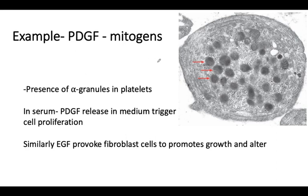When blood clots at a site, these platelets aggregate and the alpha granules secrete and contribute to clot formation. When secreted, they are released into the extracellular matrix. In serum, these PDGF platelet-type growth factors, once present, are released into the media and trigger cell proliferation.